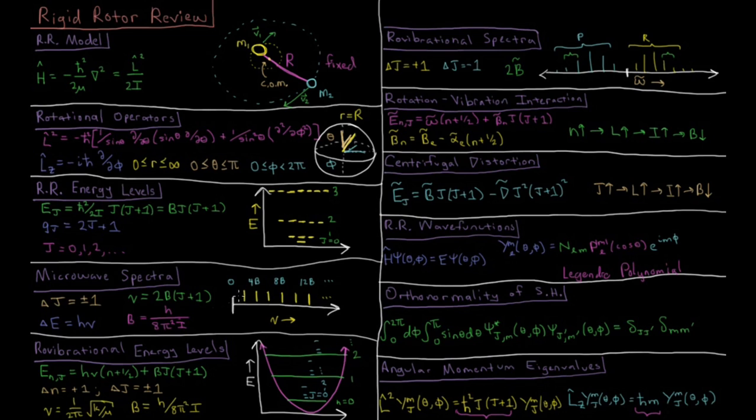Which will be 2 times b times j plus 1. This gives us a bunch of lines in a rotational spectrum which are evenly spaced, being in the microwave region based on what the typical values of b are. Much smaller in energy than vibrational energy levels.